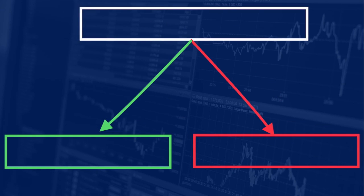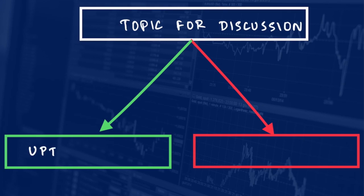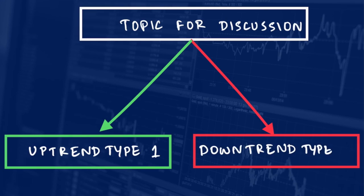First we will be covering two strategies: the first one is called uptrend type 1 and the other one is called downtrend type 1. We are discussing both these strategies together as the rules for both are almost the same — one is for finding buying opportunities and the other is for selling opportunities.